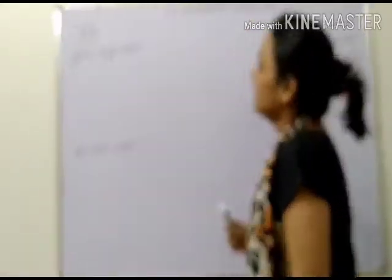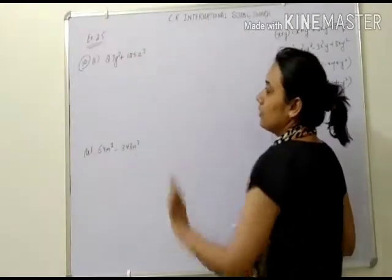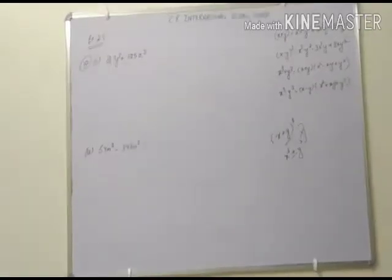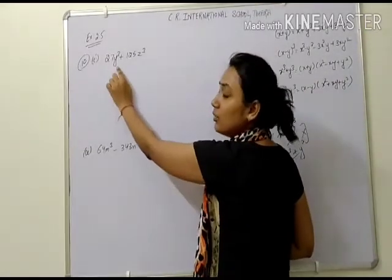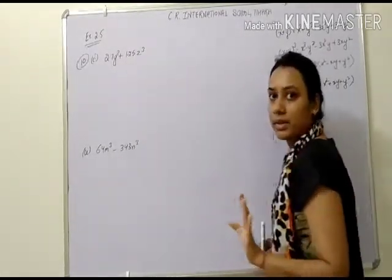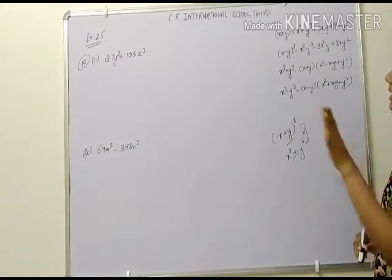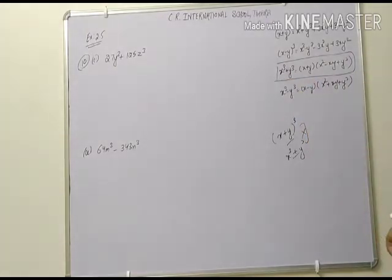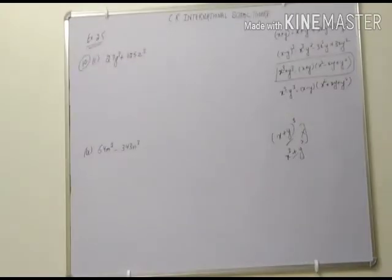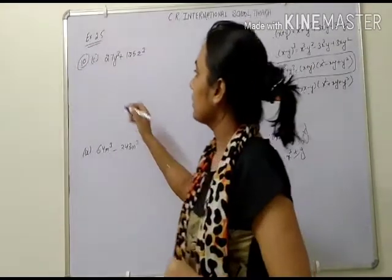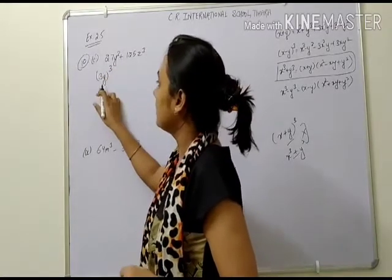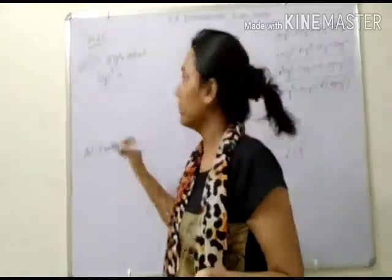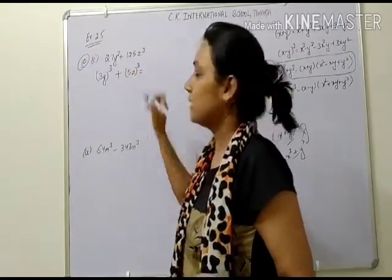First: 27y cubed plus 125z cubed. We can see cubes here, so we'll apply the cubic formula. There are two separate cube terms with a plus sign in between, so we apply x cubed plus y cubed formula. 27y cubed can be written as 3y whole cube, and 125z cubed can be written as 5z whole cube — since 27 is cube of 3 and 125 is cube of 5.